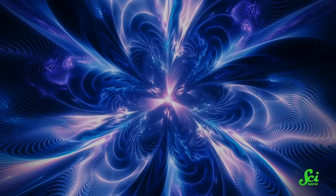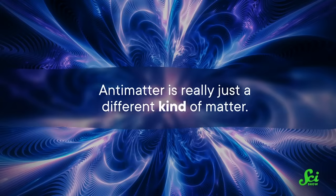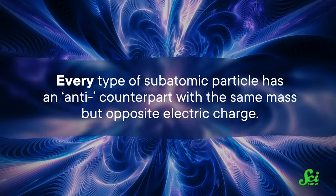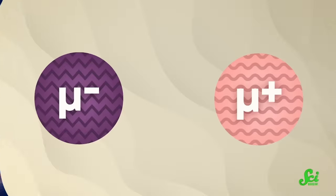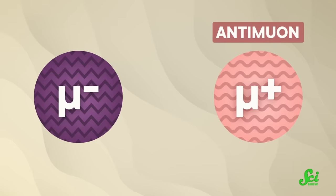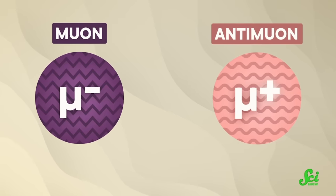Now, while visions of matter-antimatter explosions may have just popped into your head, antimatter is really just a different kind of matter. Every type of subatomic particle has an anti-counterpart with the same mass, but opposite electric charge. An antimuon has the same mass as a muon, and it decays in the same amount of time, but it has a positive charge instead of a negative one.